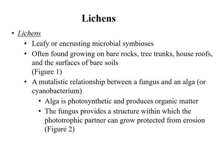There is an association between lichens and algae — they both support each other and get nutrients from each other. Lichens are leafy or encrusting microbial symbioses often found growing on bare rocks, tree trunks, house roofs, and the surface of bare soils. It is a mutualistic relationship between a fungus and an alga or cyanobacterium. The alga is photosynthetic and produces organic matter, whereas the fungus provides a structure within which the phototrophic partner can grow, protected from erosion.